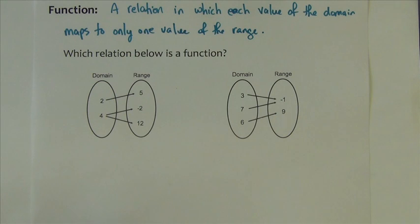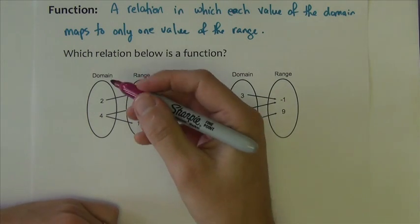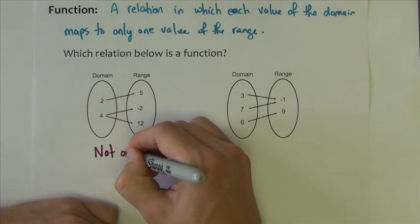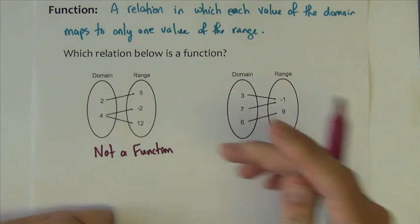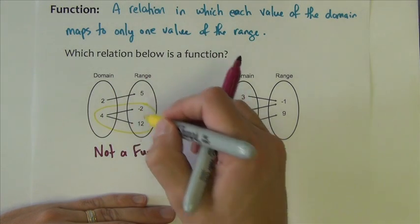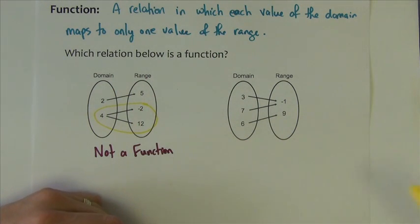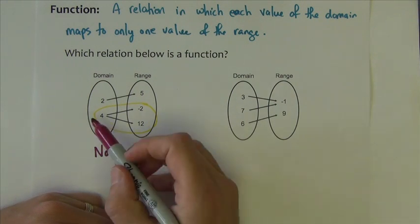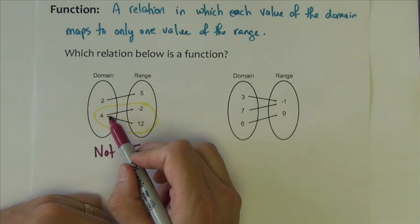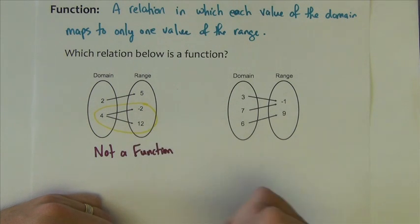So I'm showing you two mapping diagrams down here. And the question is which one of these is a function? This one is not a function. It's not a function because of right here. The definition says that every x or every domain can only have one range value. And this four has two range values. Because of that it makes it not a function.